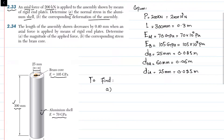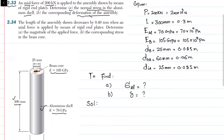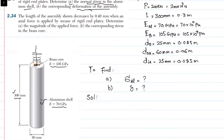In part (a) we need to find the normal stress in the aluminum shell, and in part (b) we need to find the deformation delta of the assembly. Now, this assembly is subjected to load P of 200 kilonewton. This load will be carried by both the aluminum shell and the brass core. Let P_a be the portion of axial force carried by the shell.